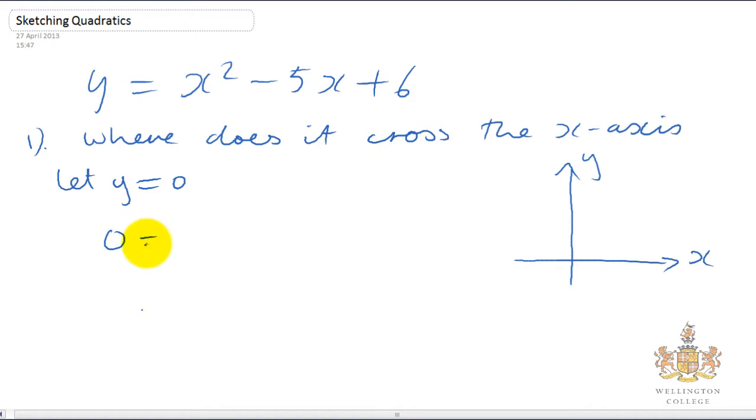So first of all we let y equal 0. So y = 0 and we get 0 = x² - 5x + 6. So we have to solve this equation to find out where it crosses the x-axis. And there's several ways to do it. One of them is to factorize and we're going to look at that method of doing so.